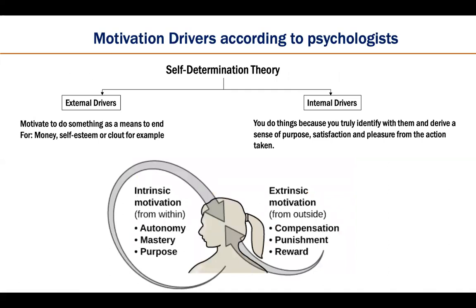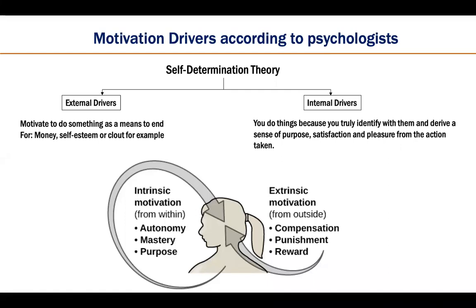According to psychologists, self-determination theory explains this. The theory splits motivational drivers into two core types: external and internal. You do some things as a means to an end — for money, self-esteem, or fear of punishment — these are external motivators. You do other things because you truly identify with them, deriving inherent purpose, identity, or pleasure — these are internal motivators.